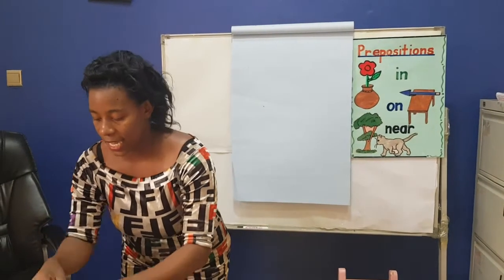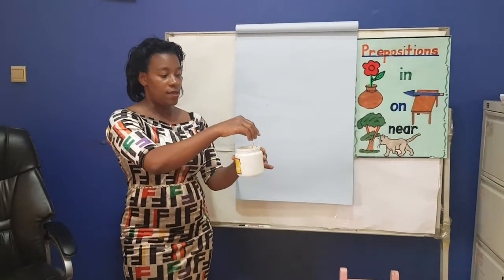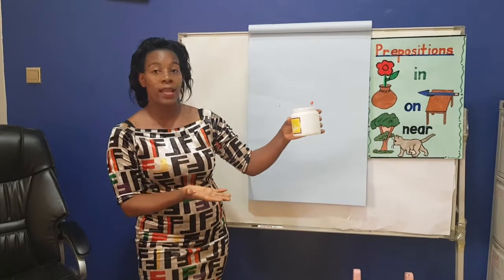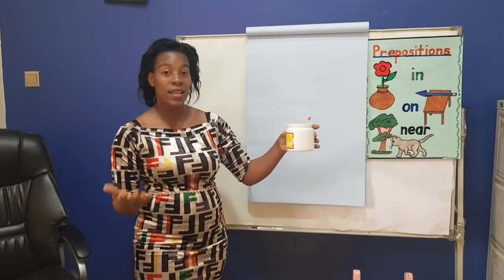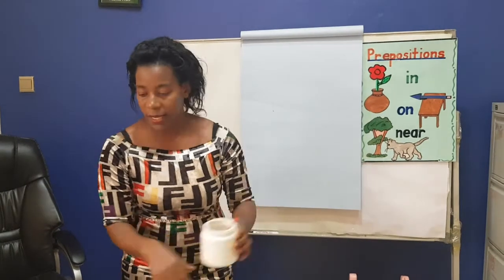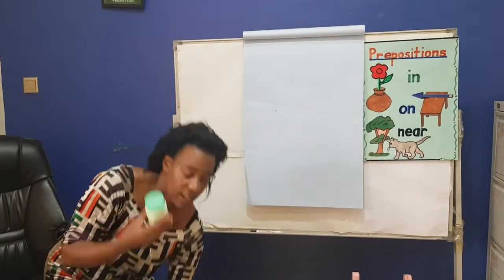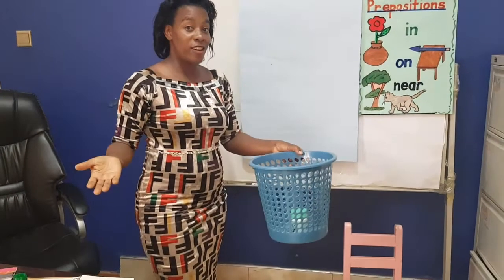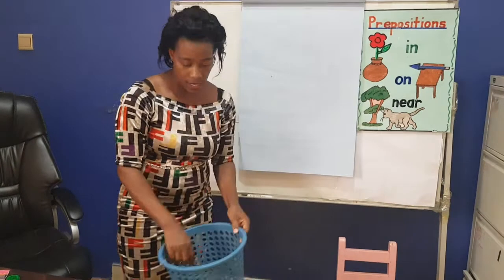I also have a tin. Where is the pen? The pen is in the tin. I also have a jerry. My jerry is here. Where is the jerry? The jerry is in the basket.